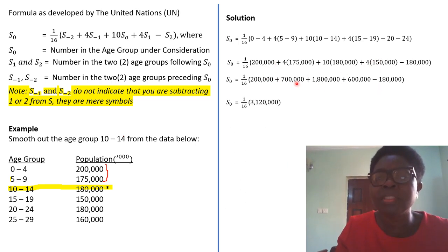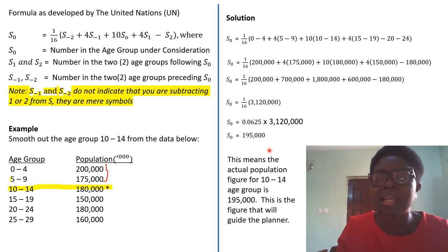After you've substituted, start working out what you have. You solve this, it brings you this, and you go on. In this case, you are now having 1 over 16 into 3 million 120,000. If you use 1 over 16 to divide, that will give you 0.0625. You now times it with this, because 'into bracket' means times, and that will give you S₀ is 195,000.